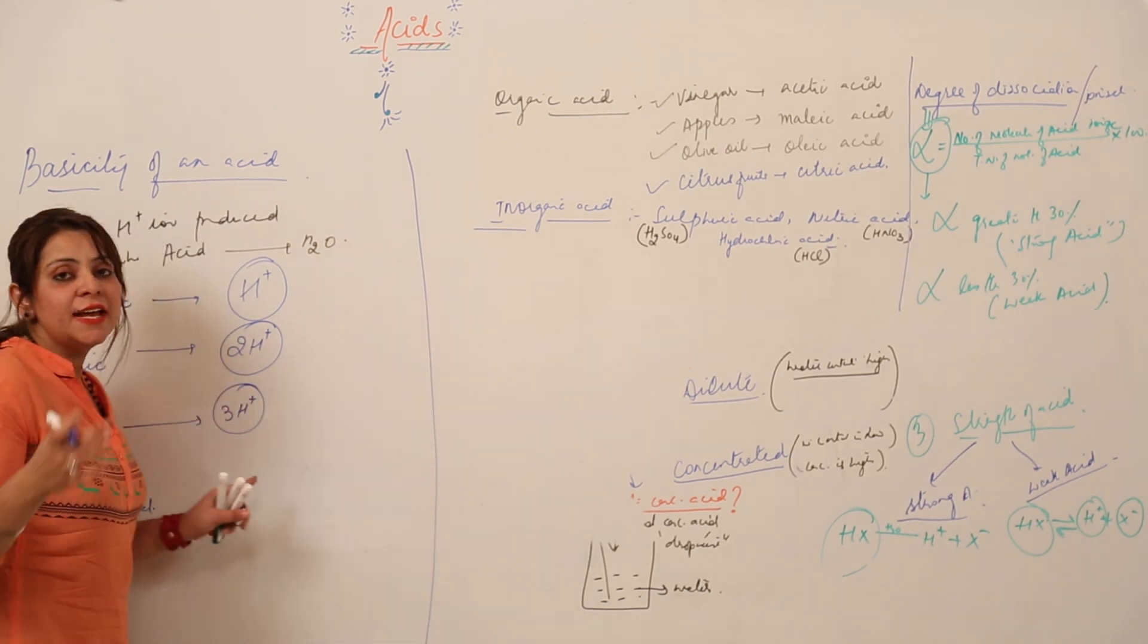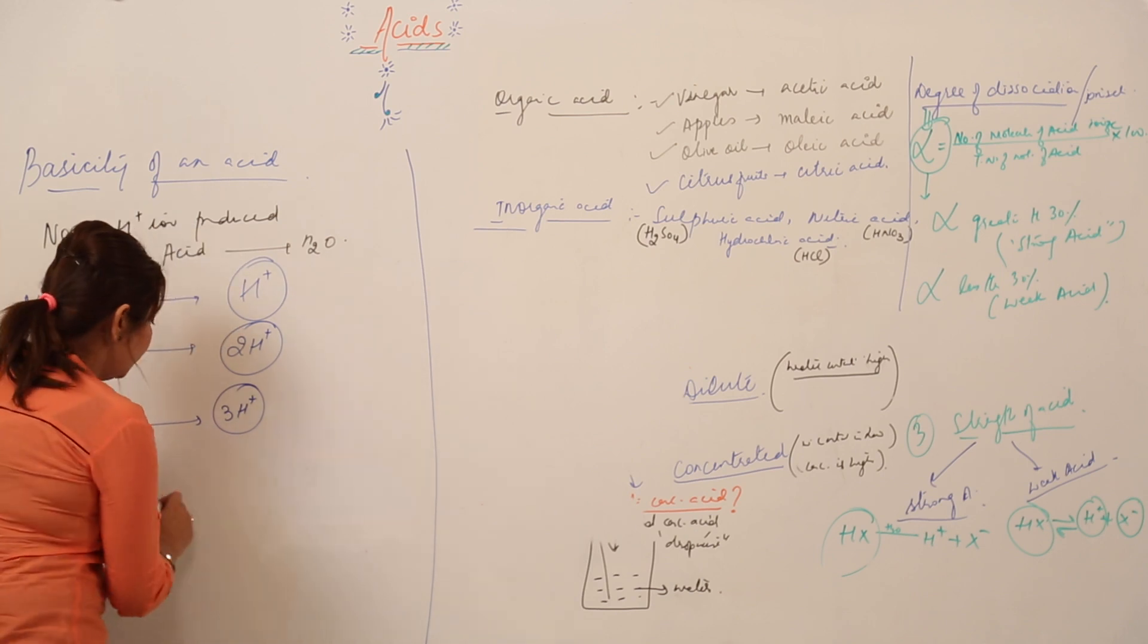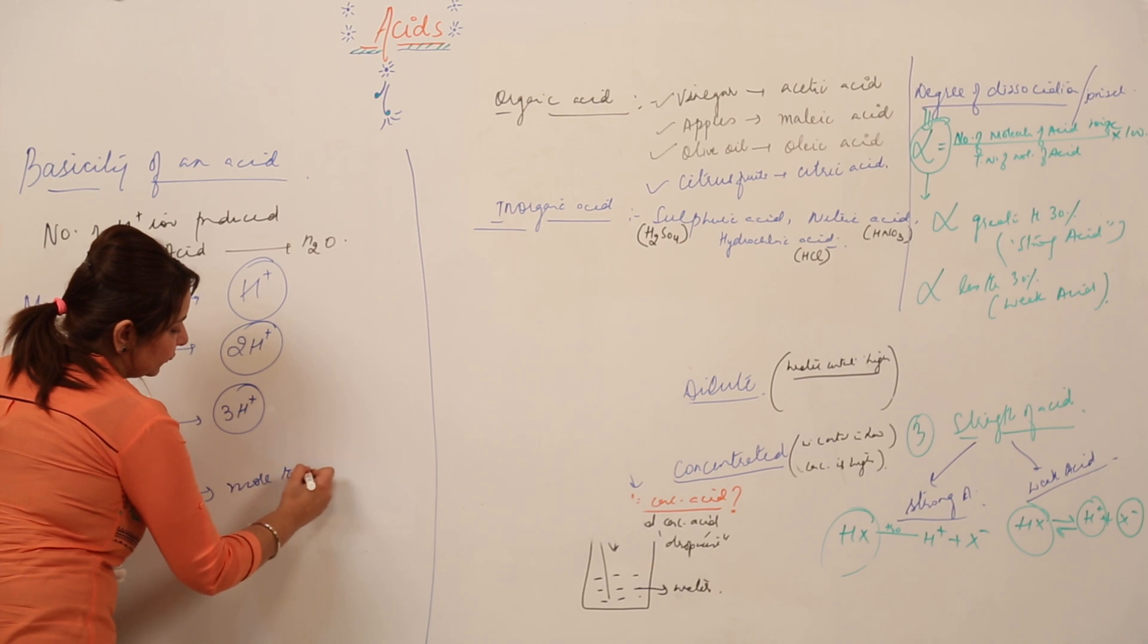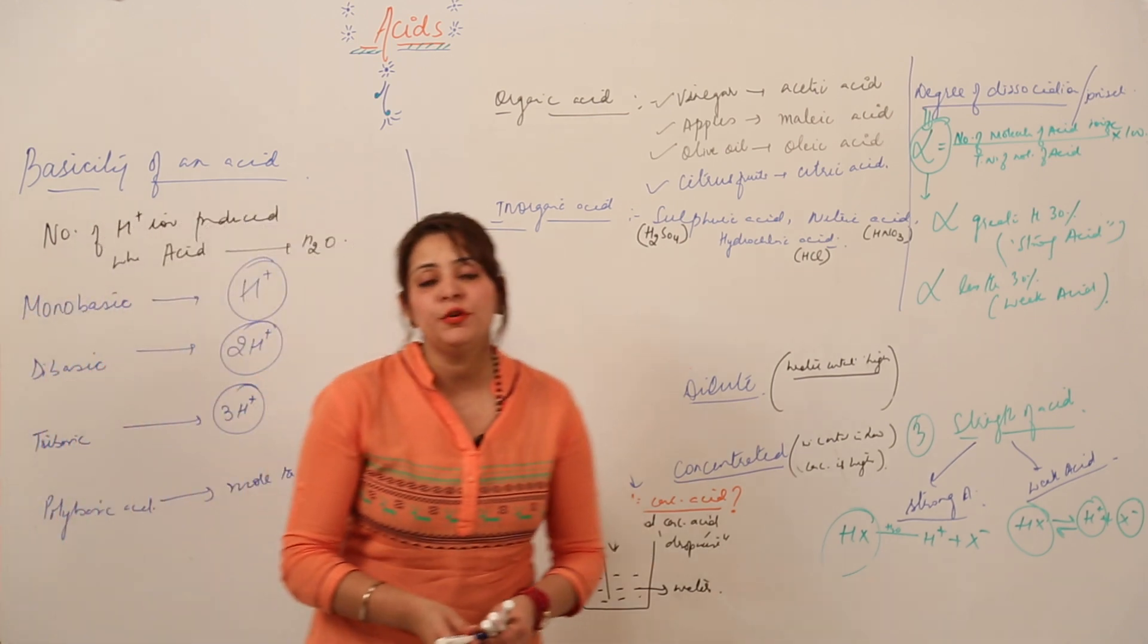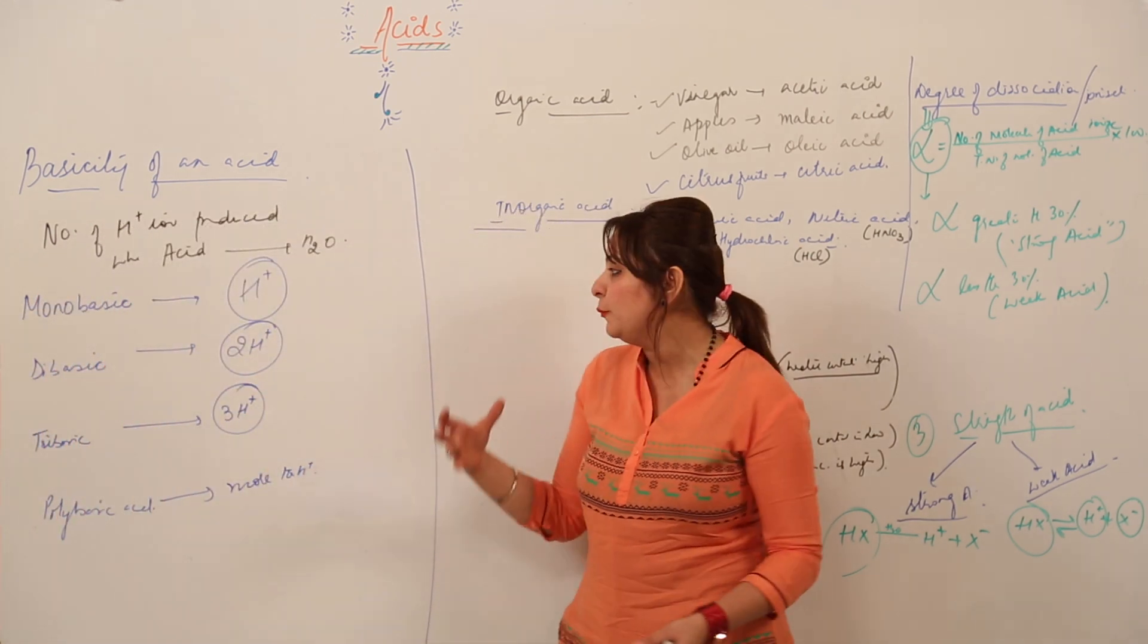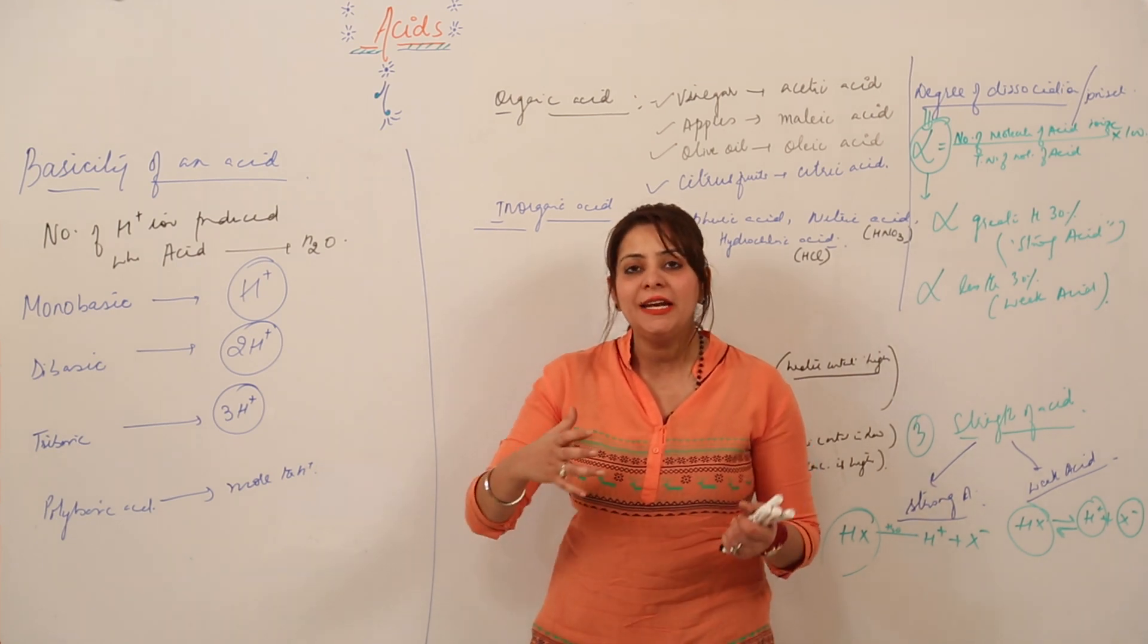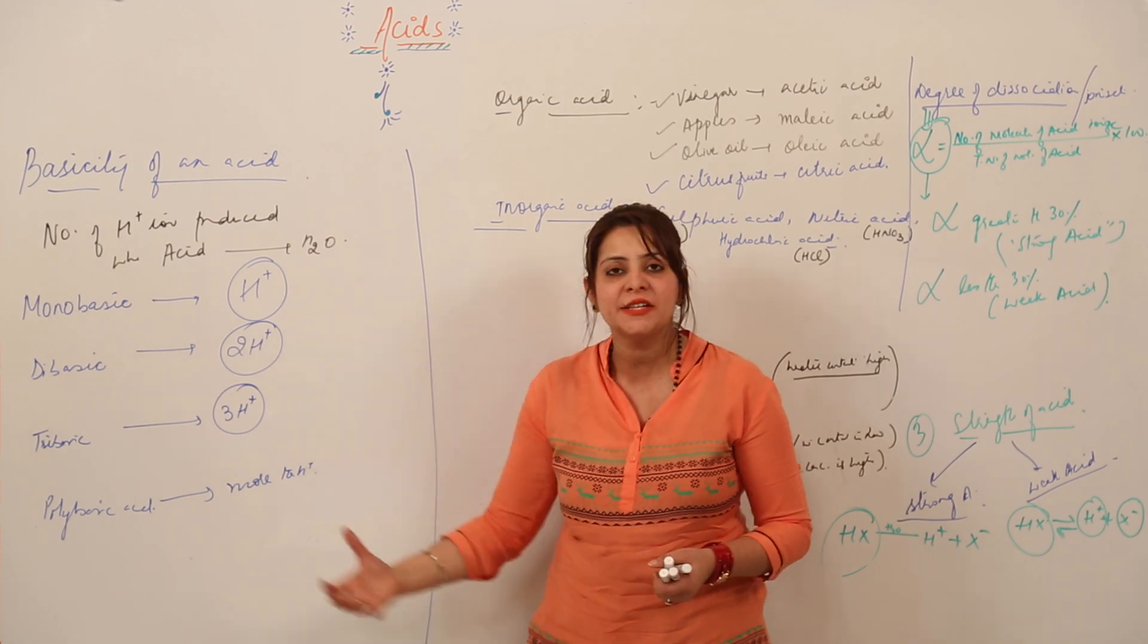And likewise, if it produced three hydrogen ions, it is said to be tribasic, and more than three we call them as polybasic acid. Do you have any example which is striking you in your mind as monobasic, dibasic?